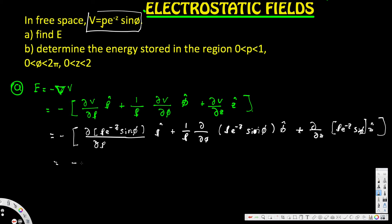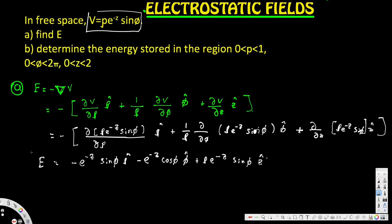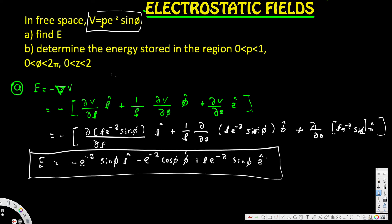After taking all the derivatives, we get: negative e^(-z)sinφ in the ρ direction, minus e^(-z)cosφ in the φ direction, plus ρe^(-z)sinφ in the z direction. This is our final electric field expression.